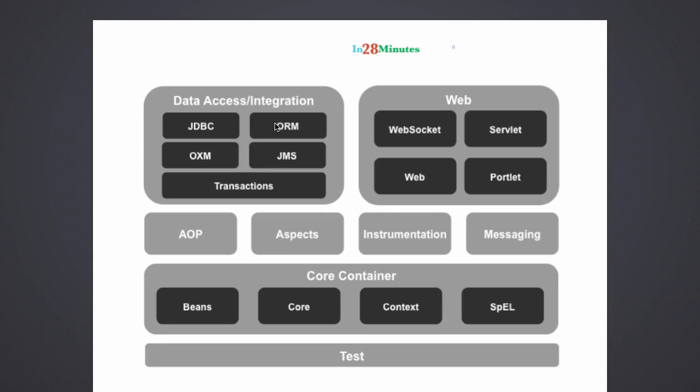Spring does not have an ORM framework of its own, but it has excellent integration with very popular ORM frameworks like Hibernate and TopLink. The Spring ORM module provides integration with Hibernate, TopLink, and any ORM framework that implements JPA — the Java Persistence API. The Spring JMS module enables integration over queues, for example MQ using JMS. The Spring OXM module handles conversion from XML to objects — most applications use XML to talk to external systems, and Spring OXM provides the capability to map an object to XML and back, helping us communicate easily with external applications.